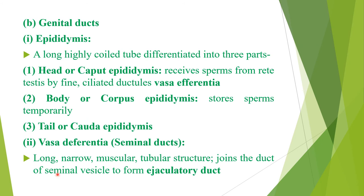Now the genital ducts. First is the epididymis — on the posterolateral side of each testis arises a highly coiled, elongated, flattened structure called the epididymis. This tube is differentiated into three parts: head or caput epididymis, body or corpus epididymis, and tail or cauda epididymis. The head receives sperms from the testes via fine ciliated ductules called vasa efferentia. The body stores sperms temporarily. The tail is the lower part involved in storage, nutrition, and physiological maturation of the sperms.